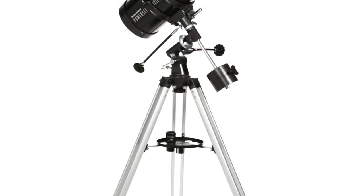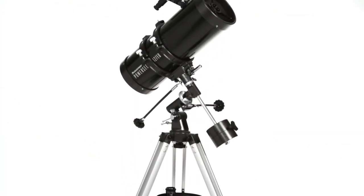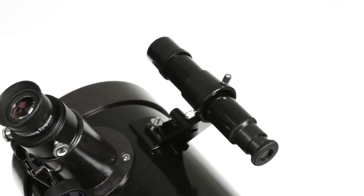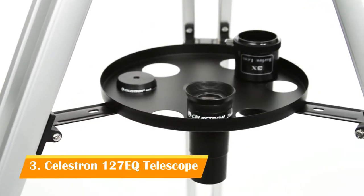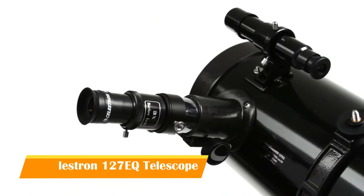These telescopes come with everything you need to get started with astronomy, including a tripod, a finder scope, two eyepieces, and a Barlow lens, which triples the power of each eyepiece.